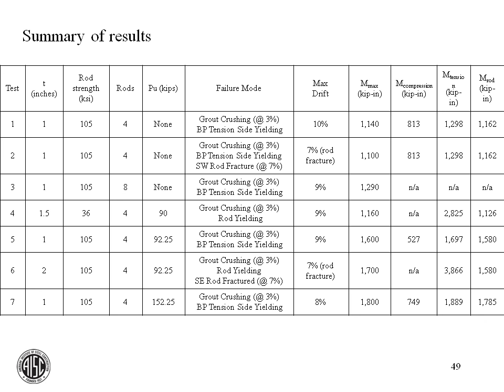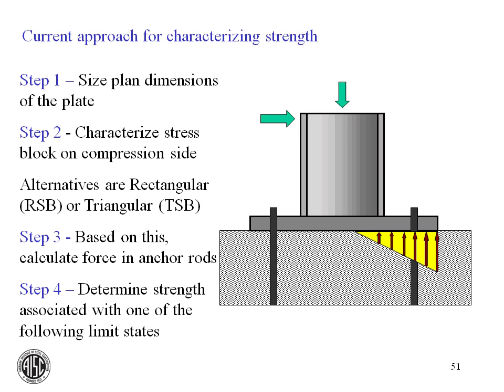The quantitative results: all seven experiments achieved incredible deformation capacity, raising the question of whether these connections need protection or whether some elastic action can be expected from them. Before discussing the moment capacity columns in the results table, Dr. Kanvinde wants to briefly review how Steel Design Guide 1 calculates connection capacities to provide context for evaluating the data.